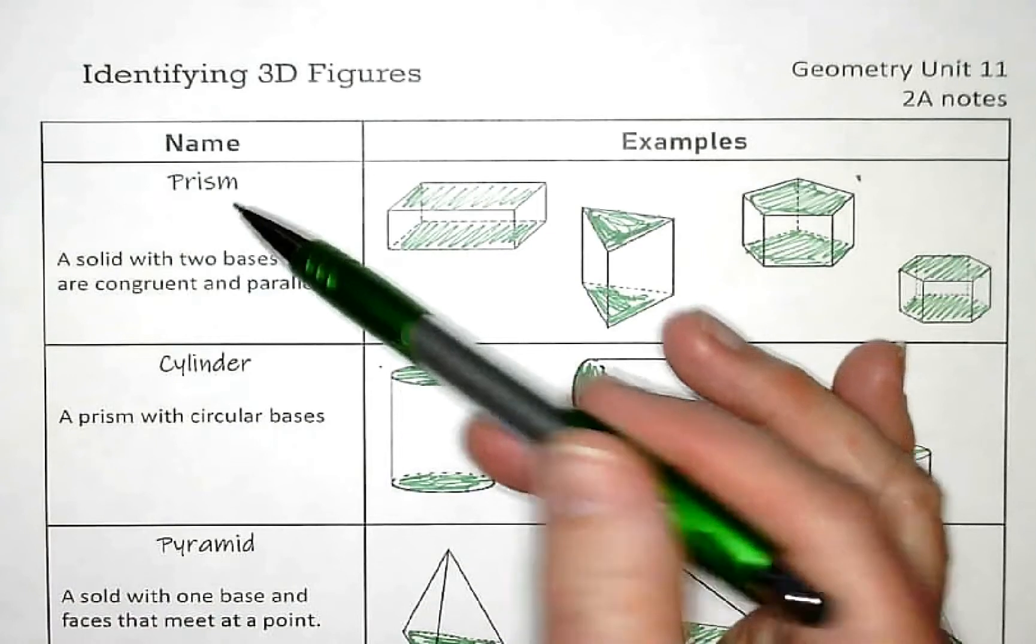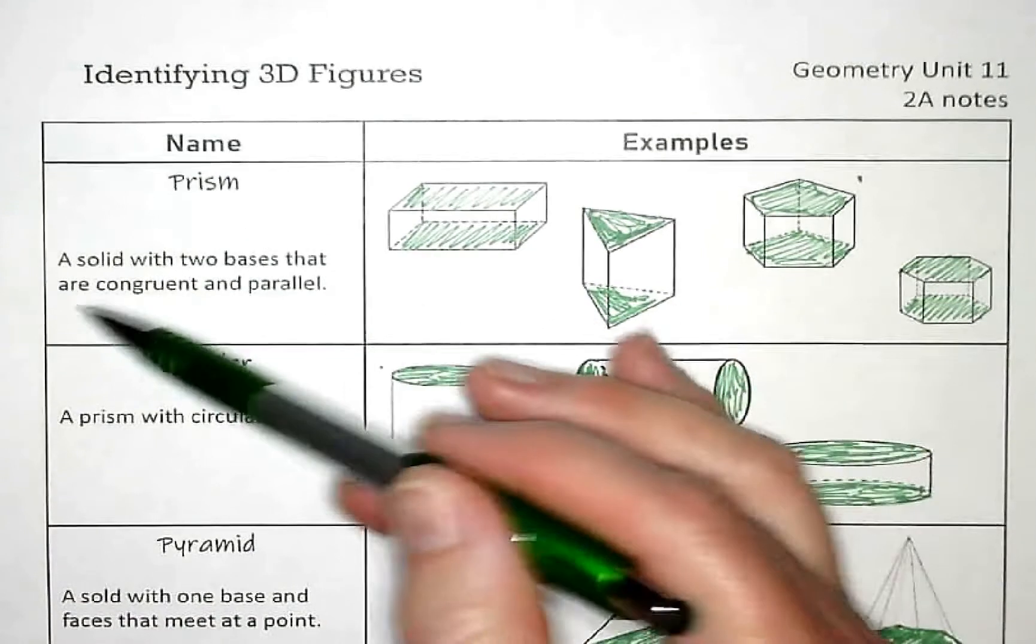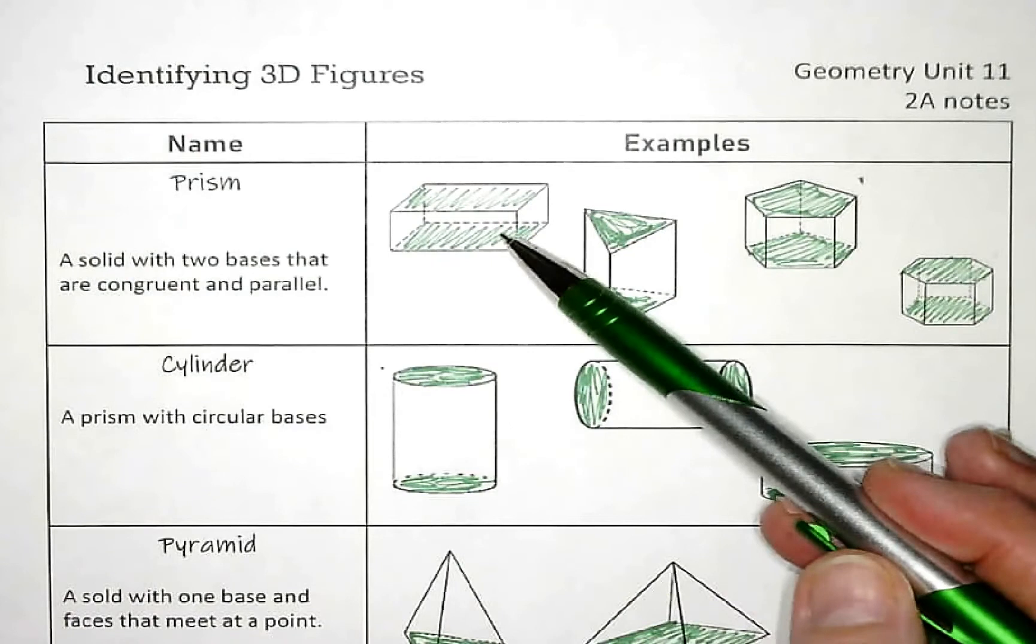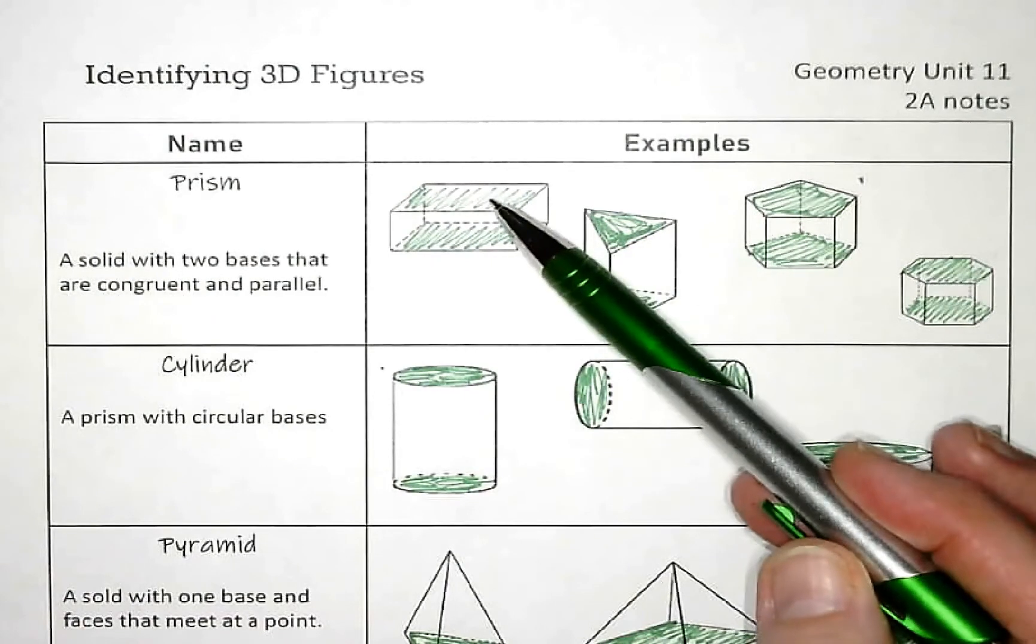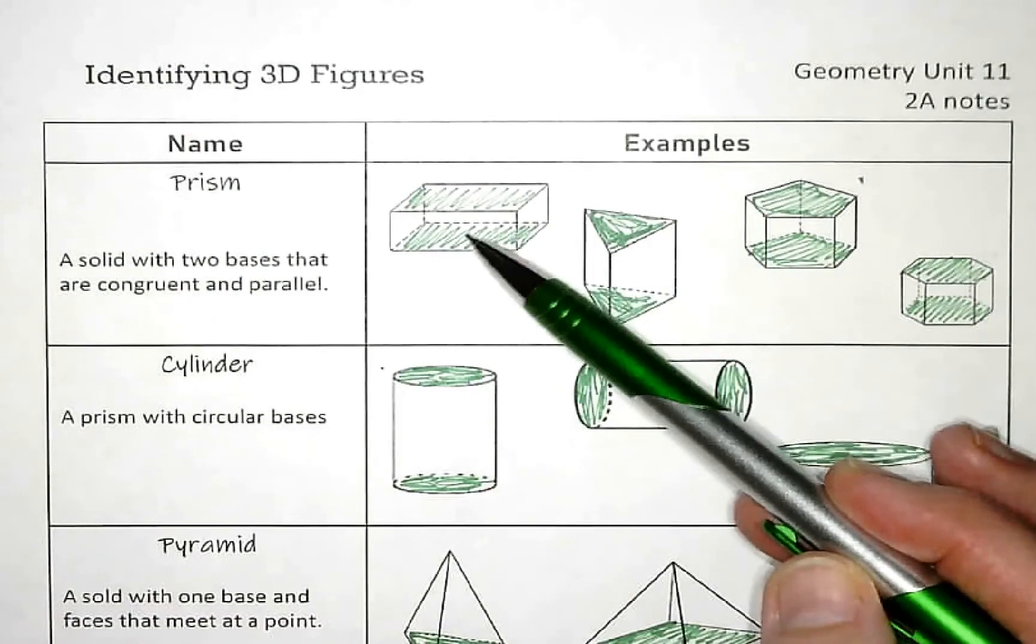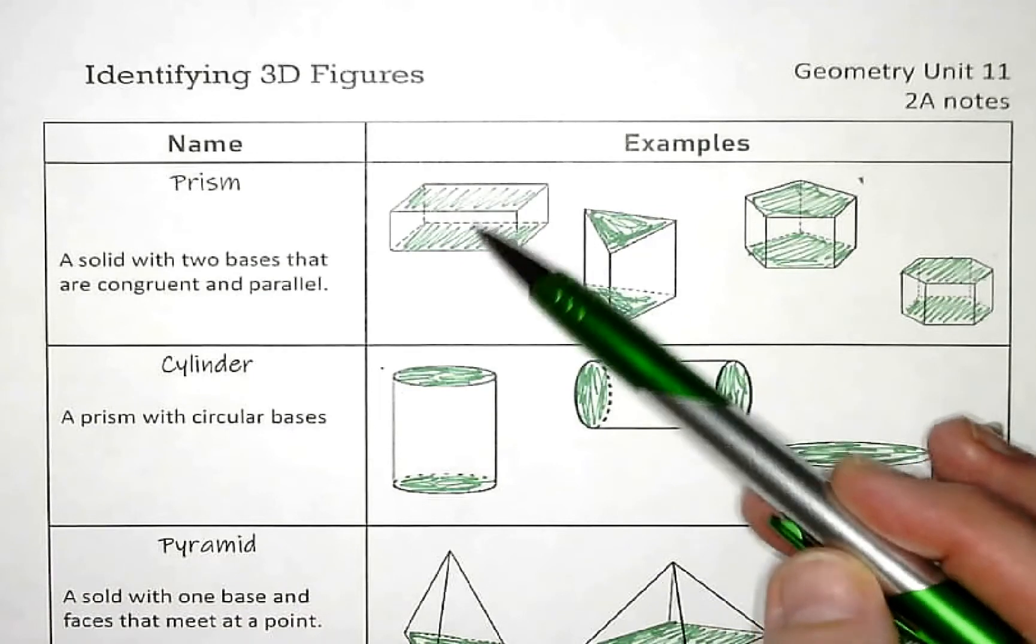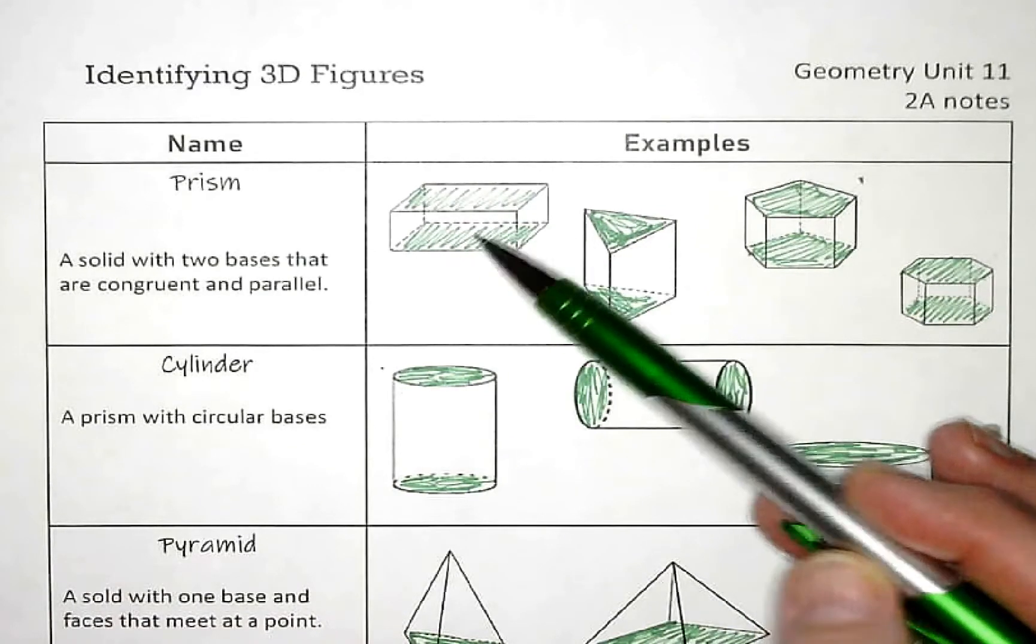So the first one is called a prism, a solid with two bases that are congruent and parallel. So you can see I've highlighted, like on this box, it's called a rectangular prism because the bases are rectangles. The two bases are rectangles and they're exactly the same.